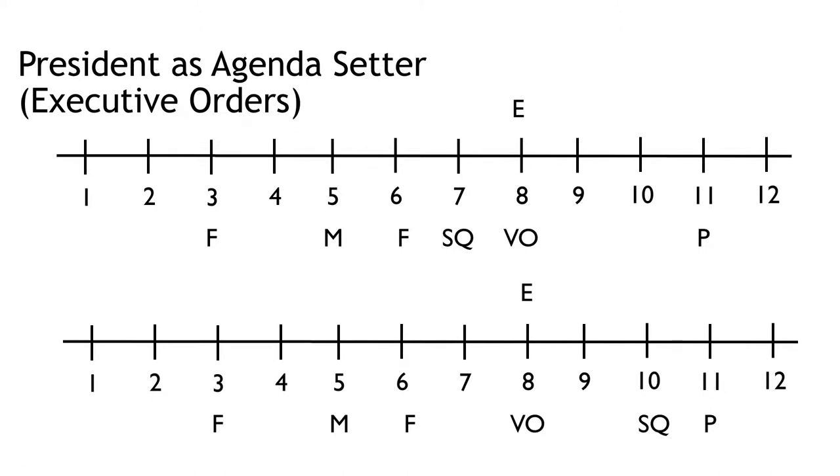We are going to shift to talking about the president as an agenda setter. The mechanism by which they do this is through issuing executive orders. We'll mark executive orders using the letter E. Functionally, one thing to understand about executive orders is that they can be used within the vacuum created when Congress doesn't pass a policy on a topic. Significantly, they can be overturned if Congress passes a new policy that supersedes an executive order. Now, turning to the two examples on the screen.